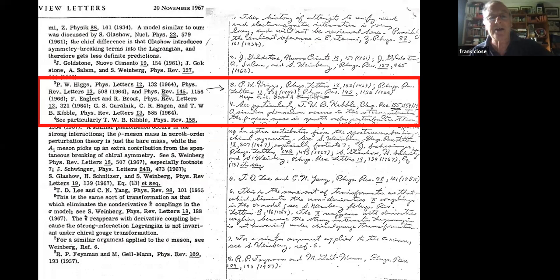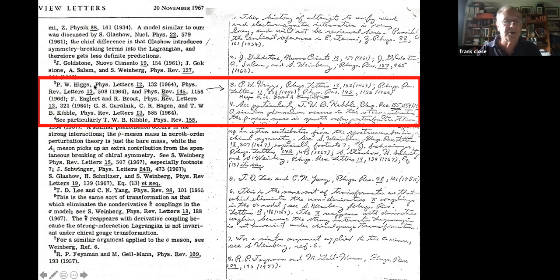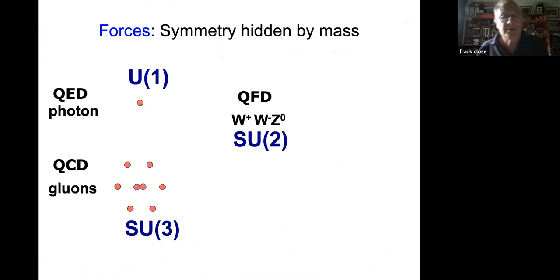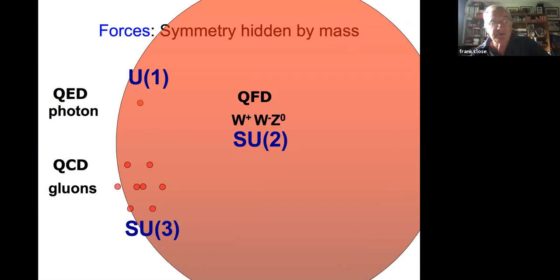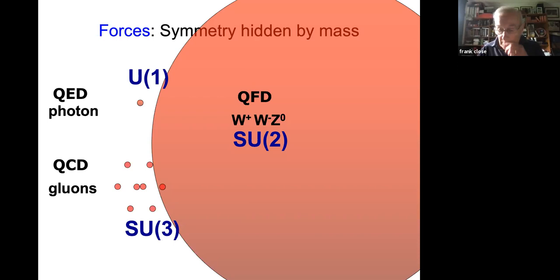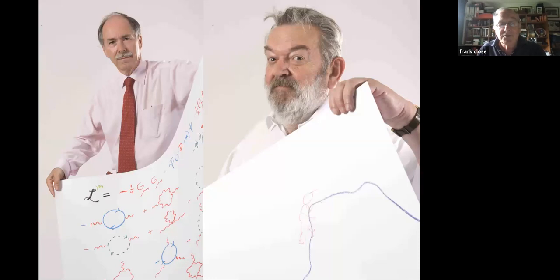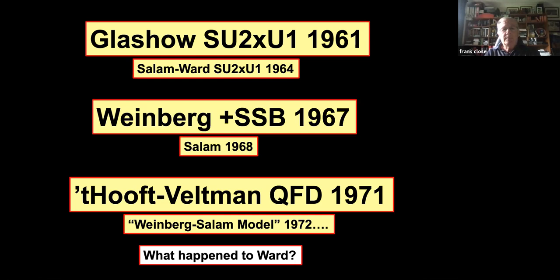Weinberg already knew of Higgs's work because he had met Higgs that summer at Brookhaven, where they had both talked about attempts to apply these ideas to the strong interaction and both failed. Weinberg went away with the insight that he was applying the right idea to the wrong problem, and applied it to weak and electromagnetic interactions. At the conference he learned of Brout and Englert's work and of Guralnik-Hagen-Kibble from Tom Kibble at Imperial. He added those references afterwards in manuscript — but he put them in after Higgs's name, because he already knew of Higgs earlier. That is how Higgs's name came to be in pole position.